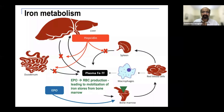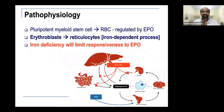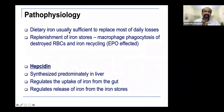When erythropoietin is given, it drives iron mobilization from bone marrow stores. The pluripotent myeloid stem cell develops into the RBC, regulated by erythropoietin. Critically, the conversion of erythroblast to reticulocyte is iron-dependent — so iron deficiency limits responsiveness to erythropoietin. Erythropoietin alone may be insufficient in iron-deficient patients. In daily life, dietary iron is usually sufficient to replace daily losses, and much recycling is done by the body itself.